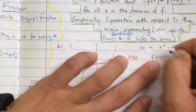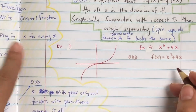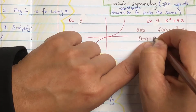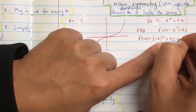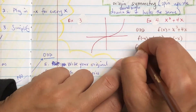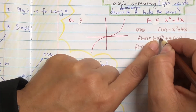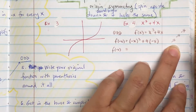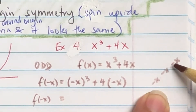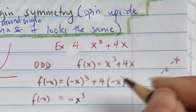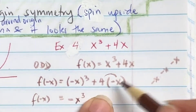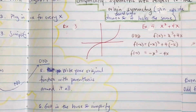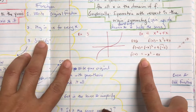Let's look at another example. Write down the original function f(x), then plug in negative x for every x. So f(-x) equals (-x) cubed plus 4(-x). Simplifying: negative x times negative x times negative x gives negative x cubed, and then we get negative 4x. So f(-x) equals negative x cubed minus 4x.